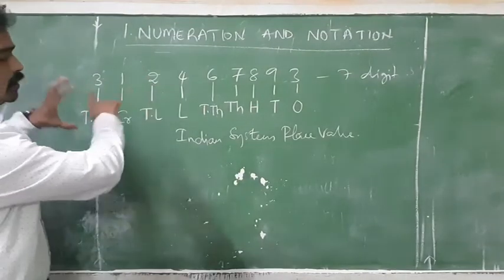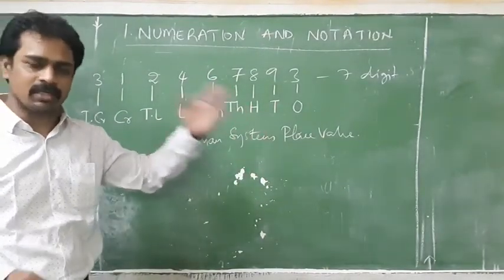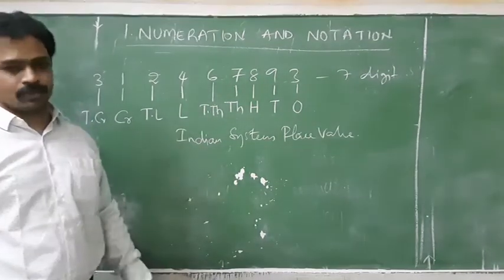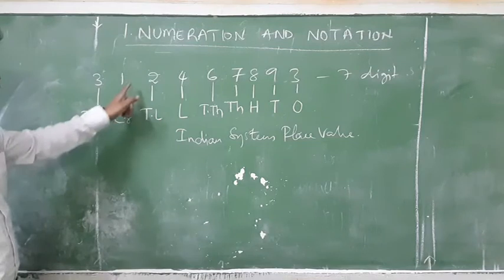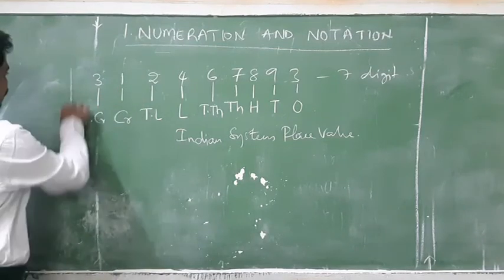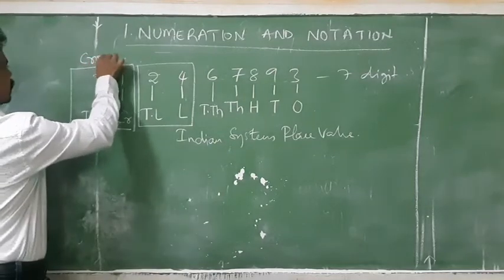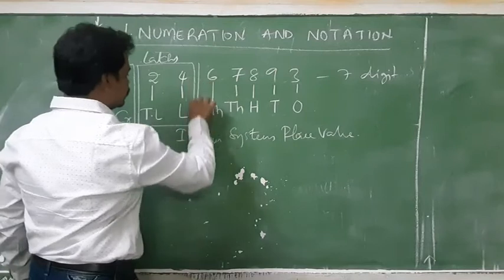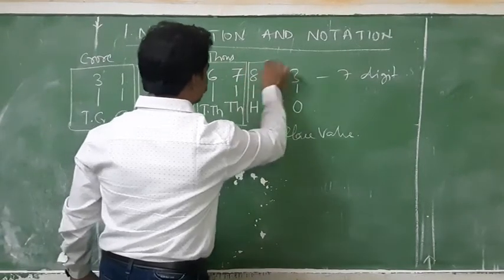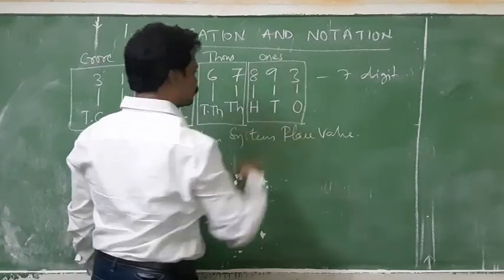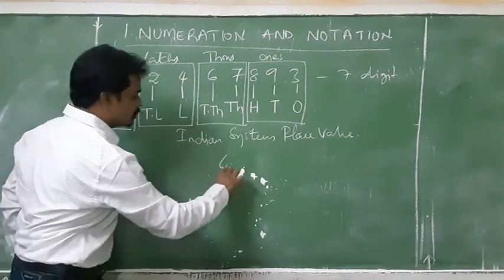Now you have to learn these things. Next concept will be easy for you. Periods. We have to read up to 10 crores — that means 3 into 10 is 30, so 30 crores. Crores category, lakhs category, thousands category, and ones category. If we categorize, we have one, two, three, four — we call them four periods.